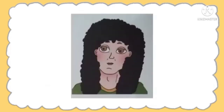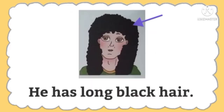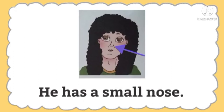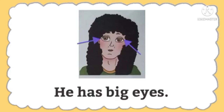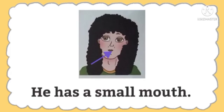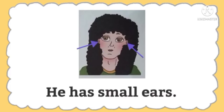Next, what does she have? Very good. She has long black hair. She has a small nose. She has big eyes. She has a small mouth. She has small ears.